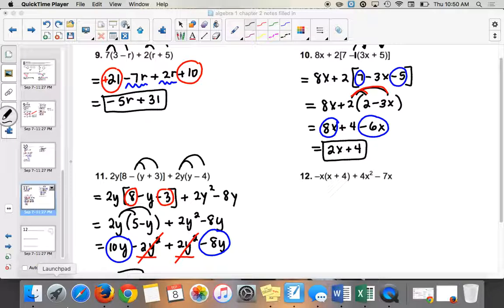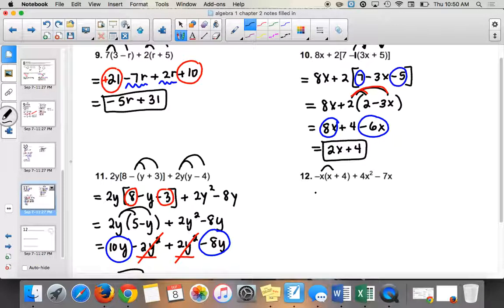Negative x in, right? If you have negative x times x, you get negative x squared. And then negative x times 4, you get negative 4x. That should be the first part.